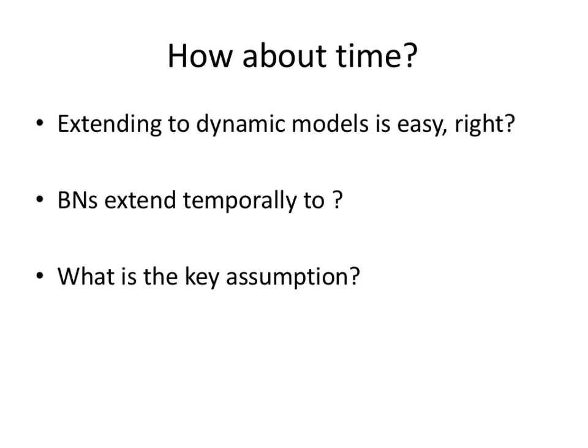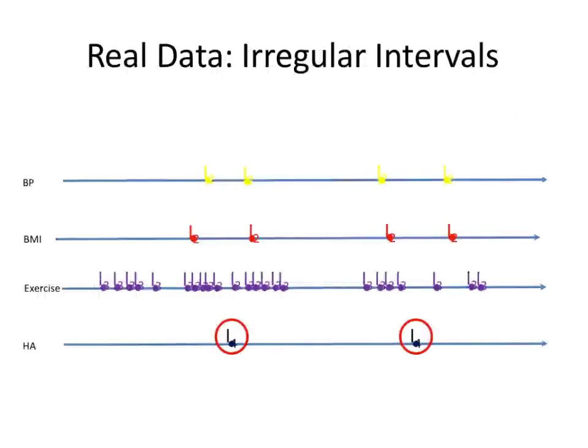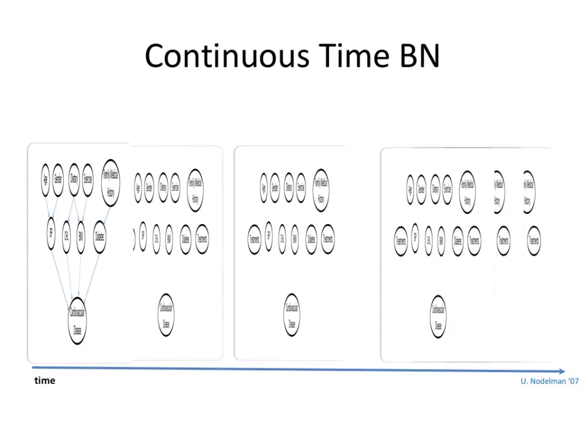If you have 300 observations for one person and 30 for another, how do you put both in the same feature vector? You'd have to either collapse one or impute the other, and both are incorrect. For example, predicting a heart attack: I can measure blood pressure, BMI, and exercise observations at different time points, but I get different numbers of observations at different times — they are not at the same time scale.